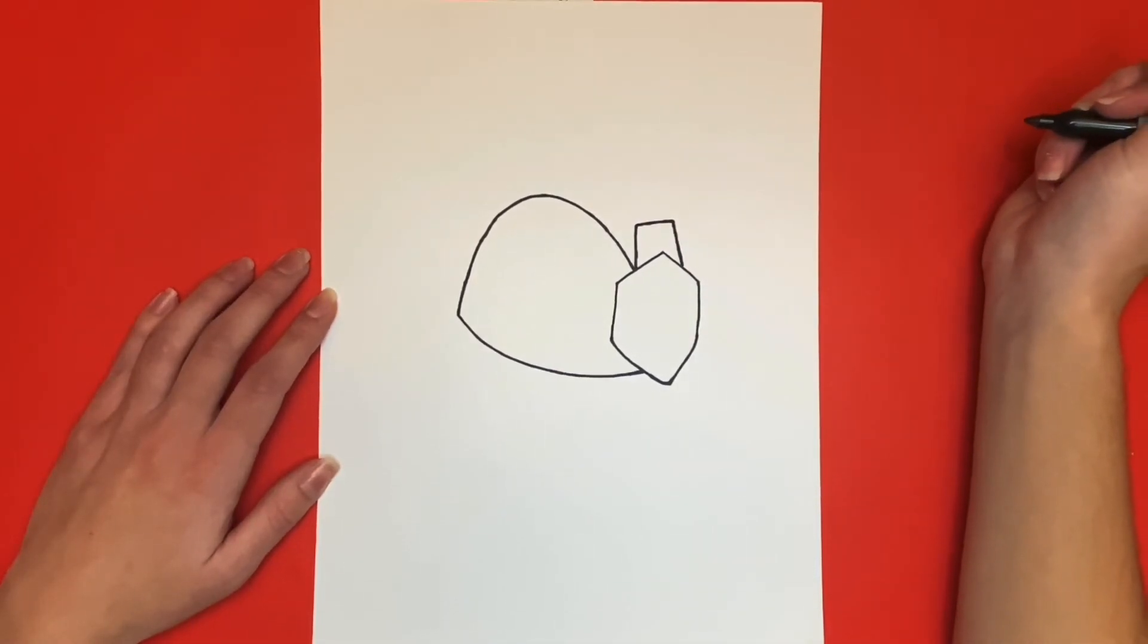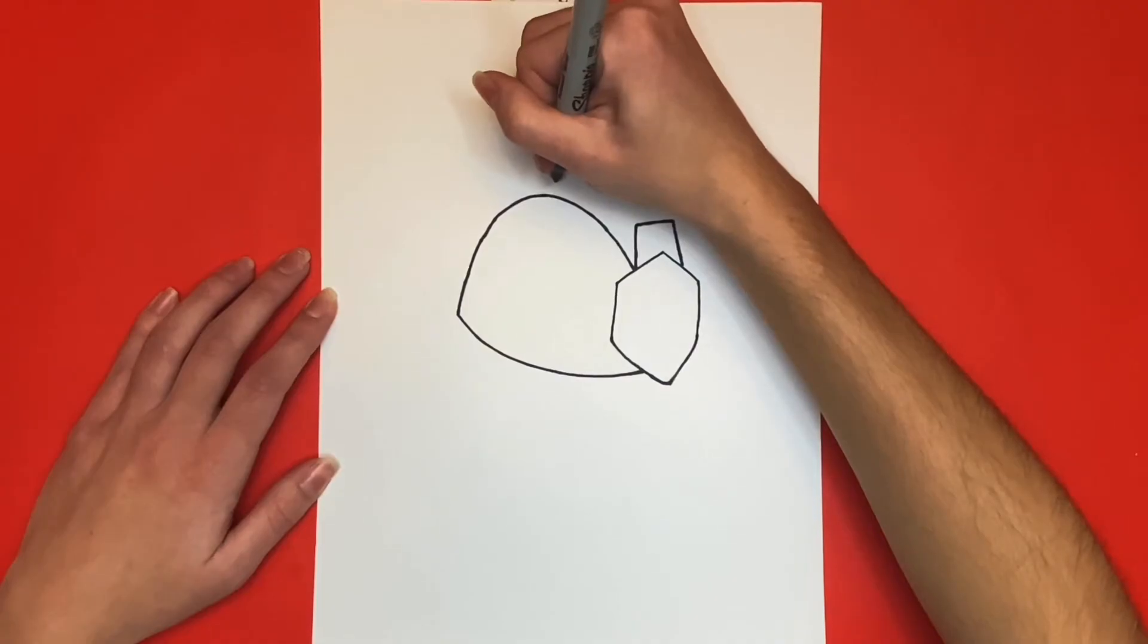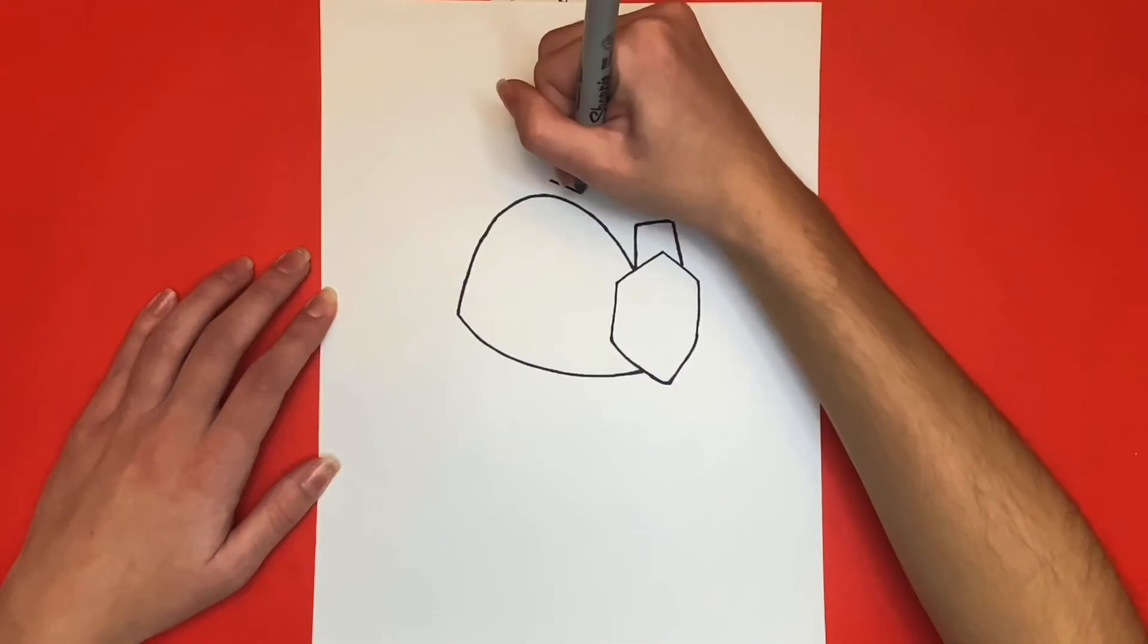Great job! Now from each corner that we just drew we're going to draw a diagonal line going across the top of the hat.